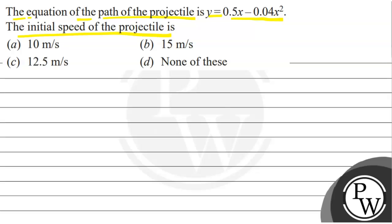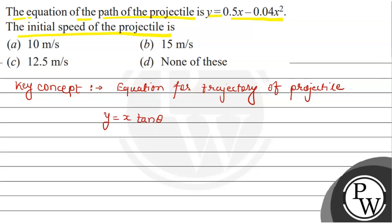Let's discuss the key concept. The key concept here is the equation for trajectory of projectile. That is, y equals x tan theta minus one by two g x square upon u square cos square theta.